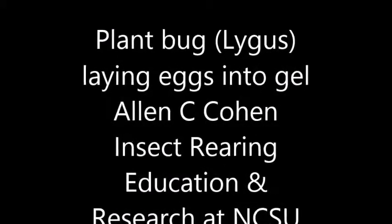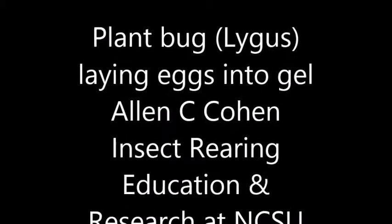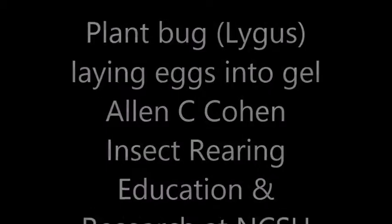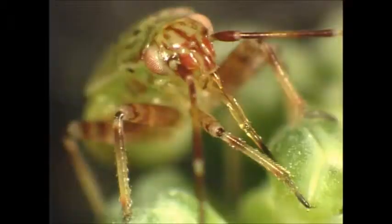Plant bugs, members of the family Miridae, lay eggs into plant tissues. This plant bug, the tarnished plant bug, is feeding on broccoli.